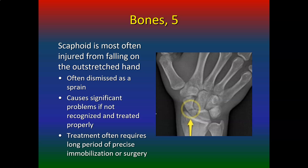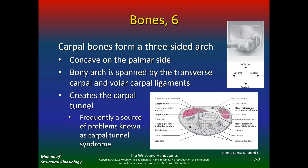Scaphoid injury is often dismissed as a sprain but causes significant problems if not recognized and treated properly, because the blood supply to the scaphoid is very poor. Treatment often requires long periods of precise immobilization or surgery.